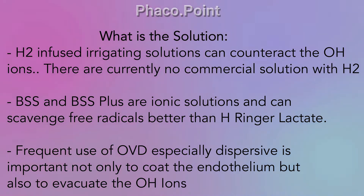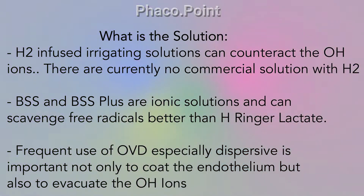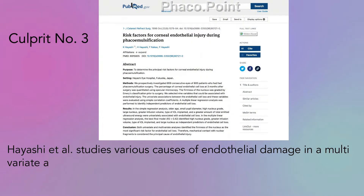However, there are currently no commercial solutions that contain diffuse hydrogen. BSS and BSS Plus are ionic solutions that can scavenge free radicals better than Hartmann's Ringer lactate. Frequent use of OVDs, especially dispersive, is important not only to coat the endothelium but also to prevent damage from hydroxyl ions.